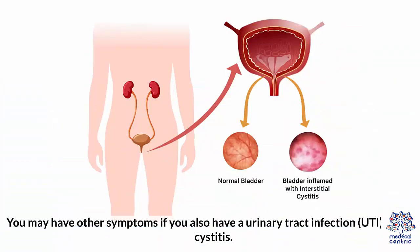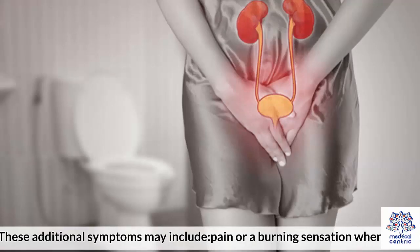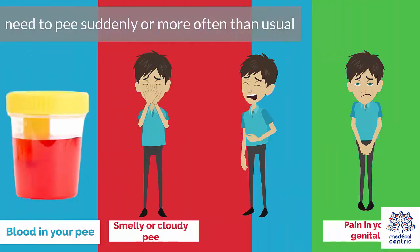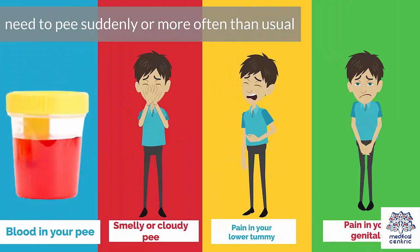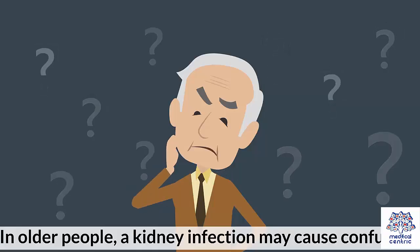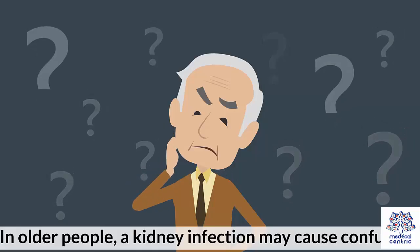You may have other symptoms if you also have a urinary tract infection or UTI, such as cystitis. These additional symptoms may include pain or a burning sensation when peeing, needing to pee suddenly or more often than usual, blood in your pee, smelly or cloudy pee, pain in your lower tummy, and pain in your genitals. In older people, a kidney infection may cause confusion.